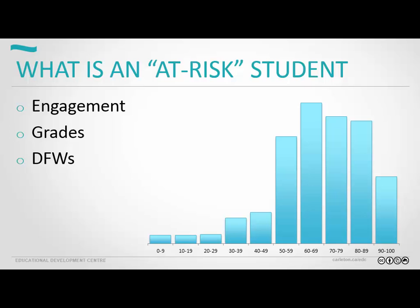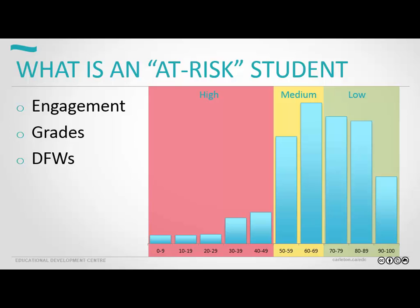What is an at-risk student? Generally, when we talk about at-risk, there are a number of indicators, but we usually look at engagement or grades — that is, the DFW rate. Looking at an average class distribution — the colors are supposed to be red, orange, and green — we see that at-risk students are students that are presently failing the course. This distribution is fairly typical for most assignments and most courses. We see a little bit higher at-risk students in first-year courses.